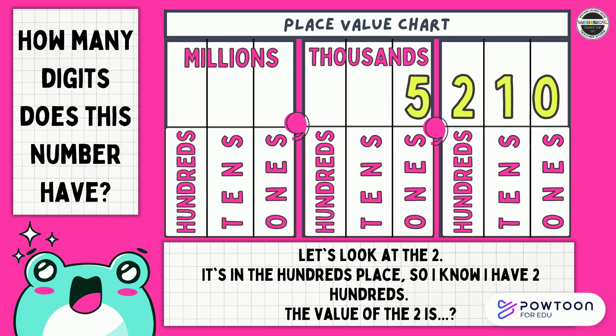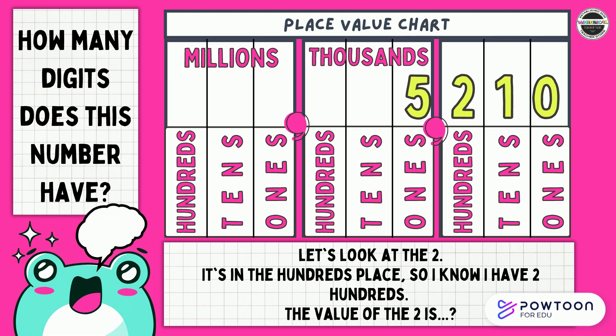How many digits does this number have? That's right, it's got 4. Let's look at the 2 — it's in the hundreds place, so I know I have two hundreds. The value of the 2 is? Think, then respond. That's right, it's 200. I can say two hundreds or 200.